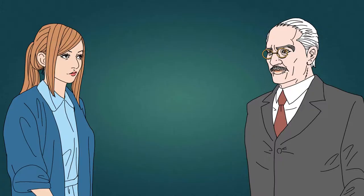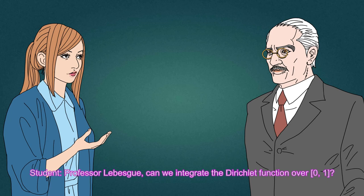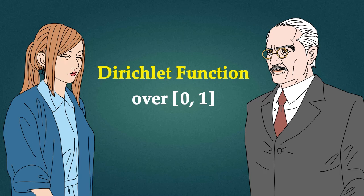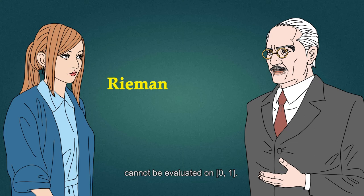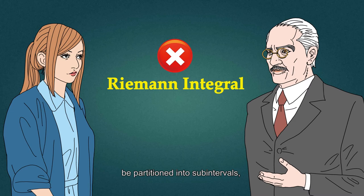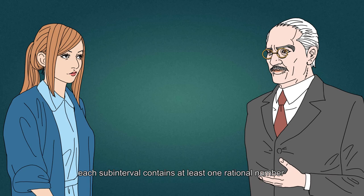Professor Lebesgue, can we integrate the Dirichlet function over [0, 1]? The Riemann sum of Dirichlet function cannot be evaluated on [0, 1]. No matter how the interval [0, 1] be partitioned into subintervals, each subinterval contains at least one rational number and one irrational number, because both rational and irrational are dense in real numbers.